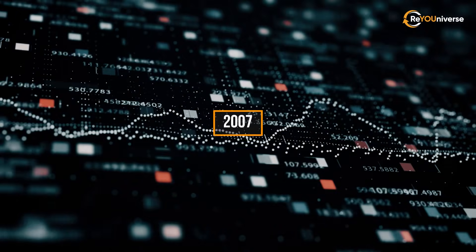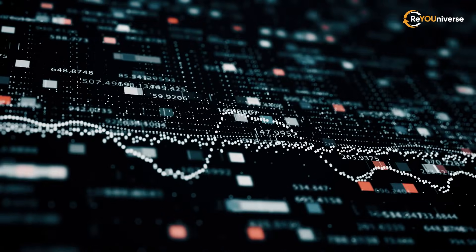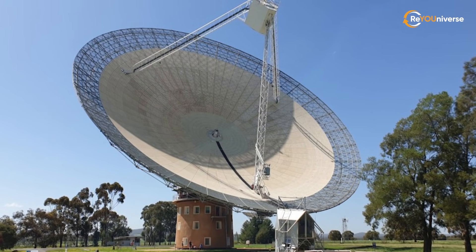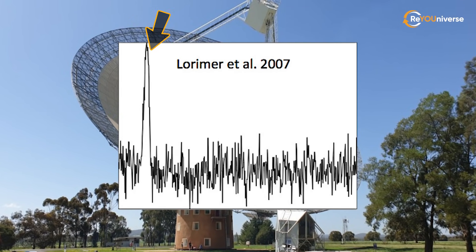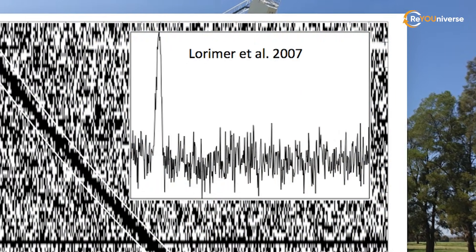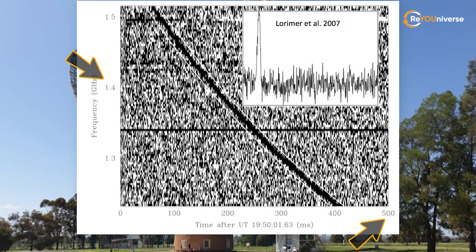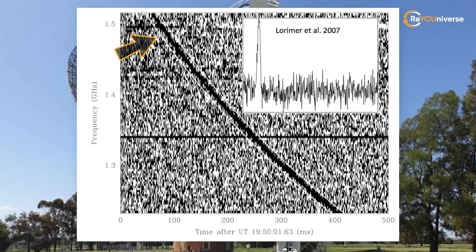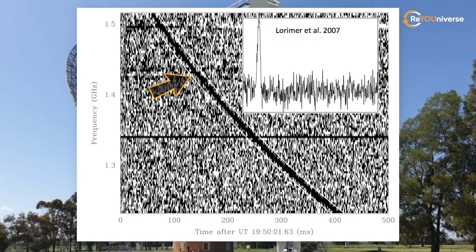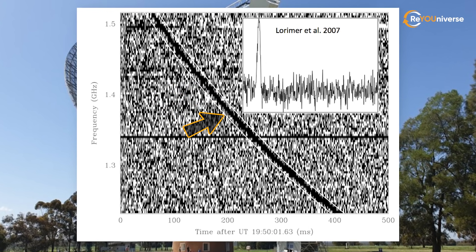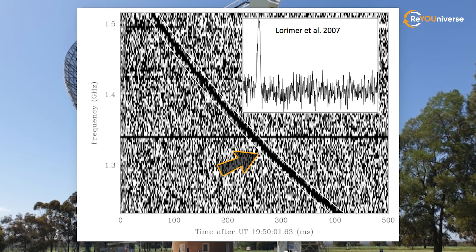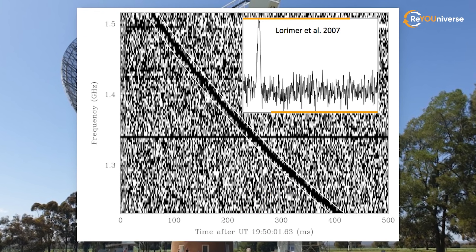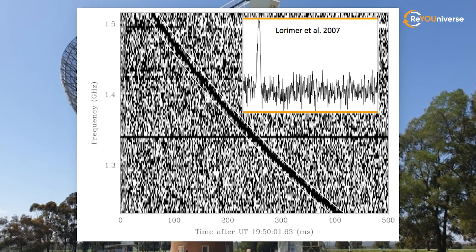In 2007, researchers discovered something strange when analyzing archival data from the Australian Parks Telescope. It was a millisecond burst of high-intensity radio emission. Down frequency across time in milliseconds, the burst signal is represented by a dark bar. At low frequencies, the signal arrives later due to the dispersion of radio waves in the intergalactic medium. The inset shows the signal's time profile at a fixed frequency.